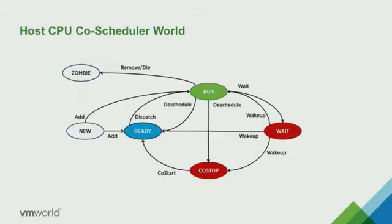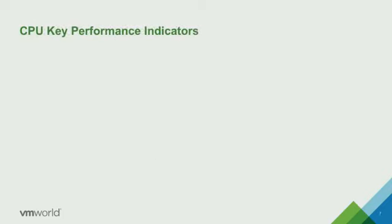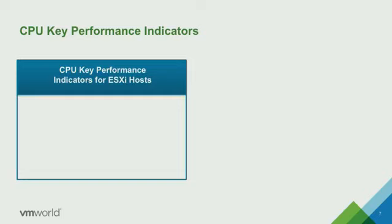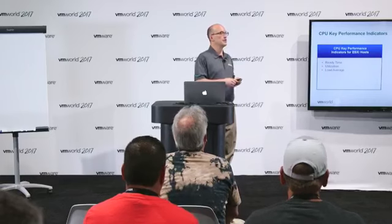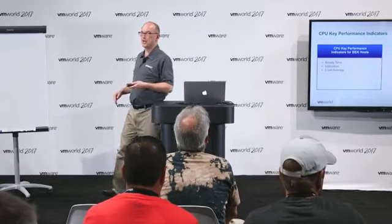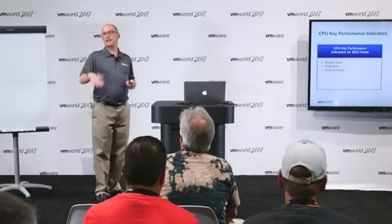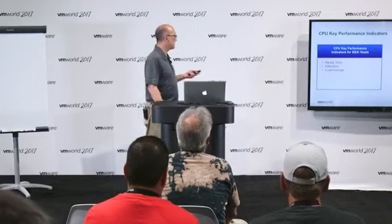The ready state simply means that particular process is ready and waiting its turn to get on and run the CPU — it's called CPU ready. It can go between dispatch and deschedule, meaning it's my turn to get on the CPU. Here you have some key performance indicators for the ESXi host: ready time, CPU utilization, and load average.